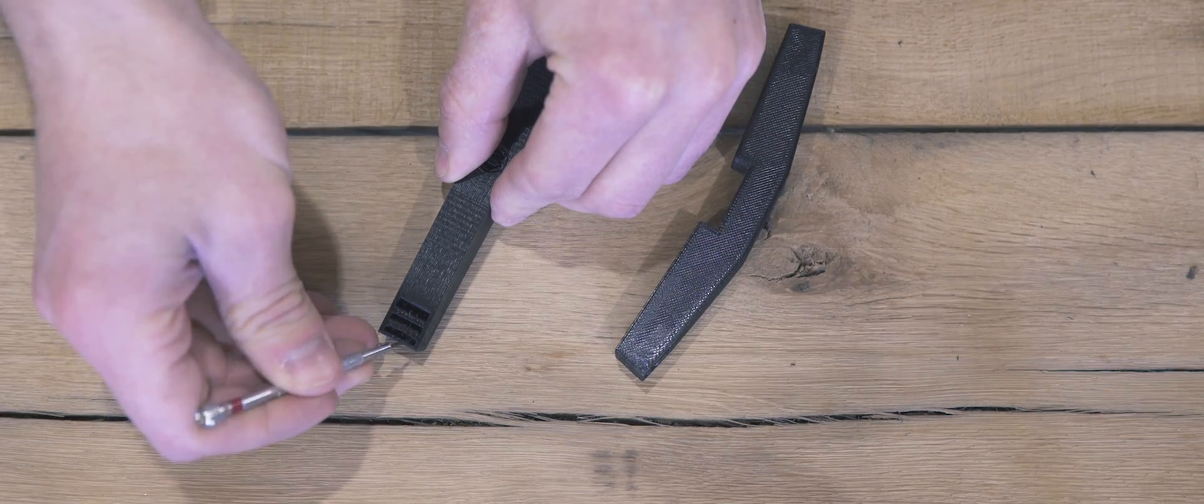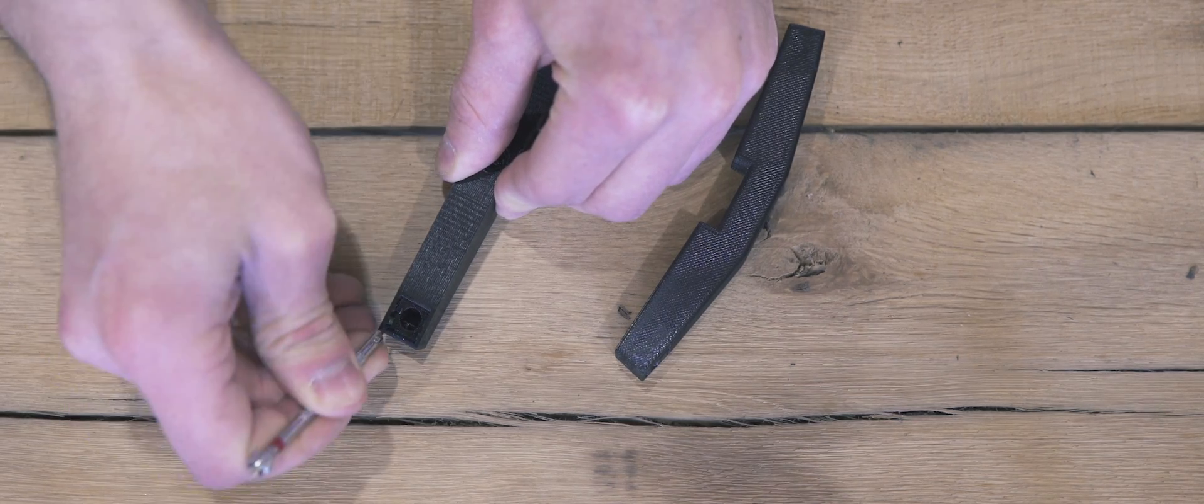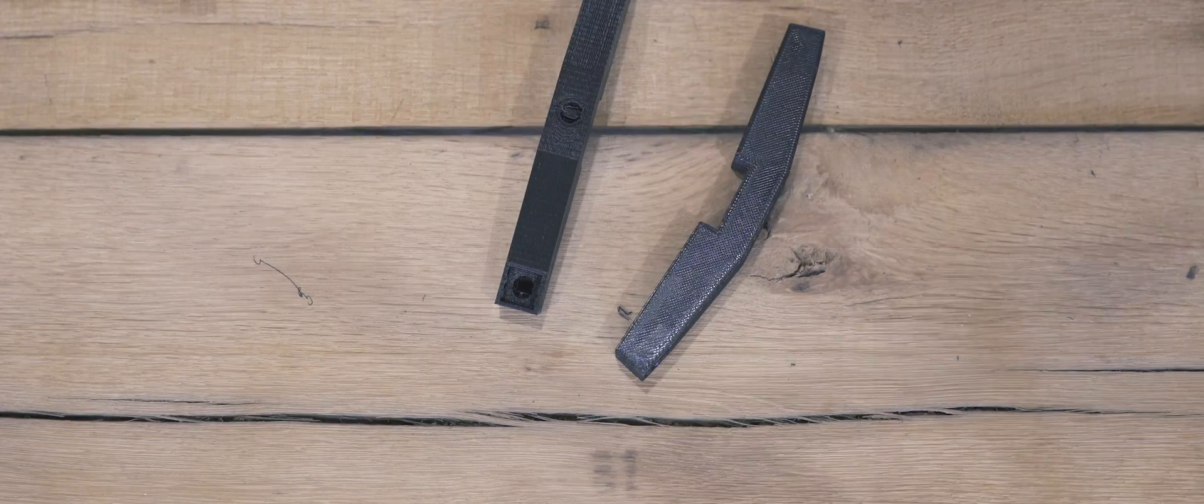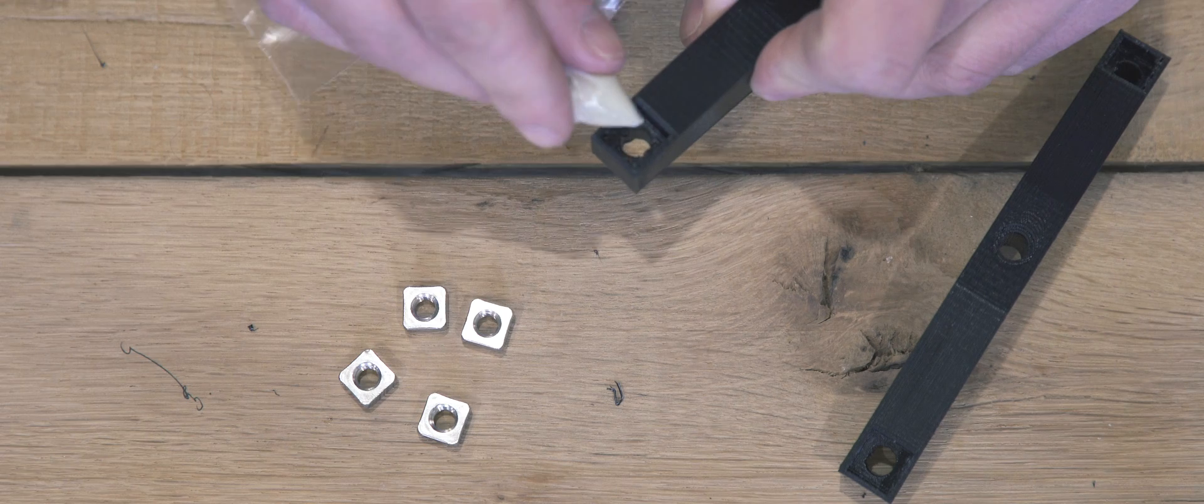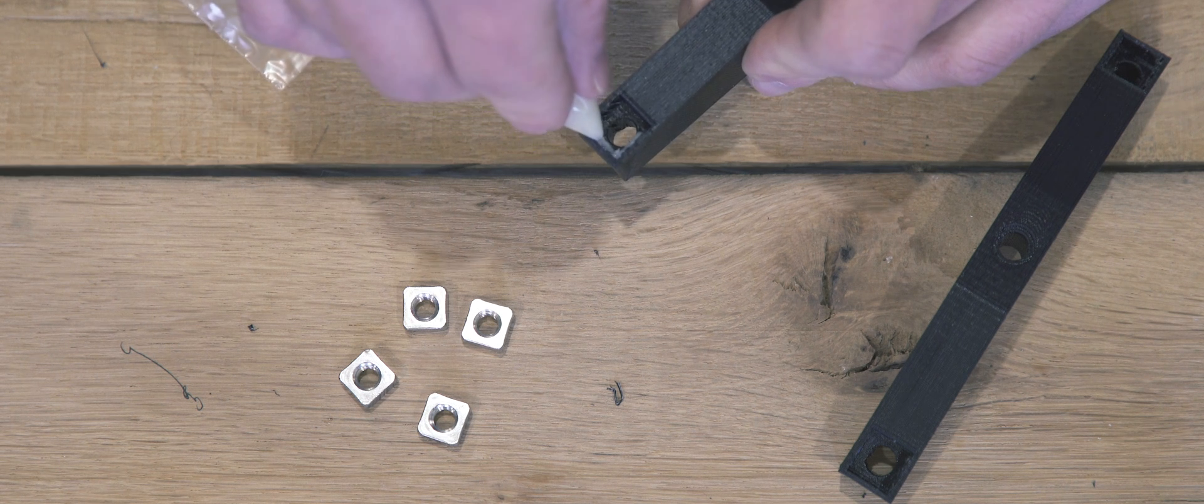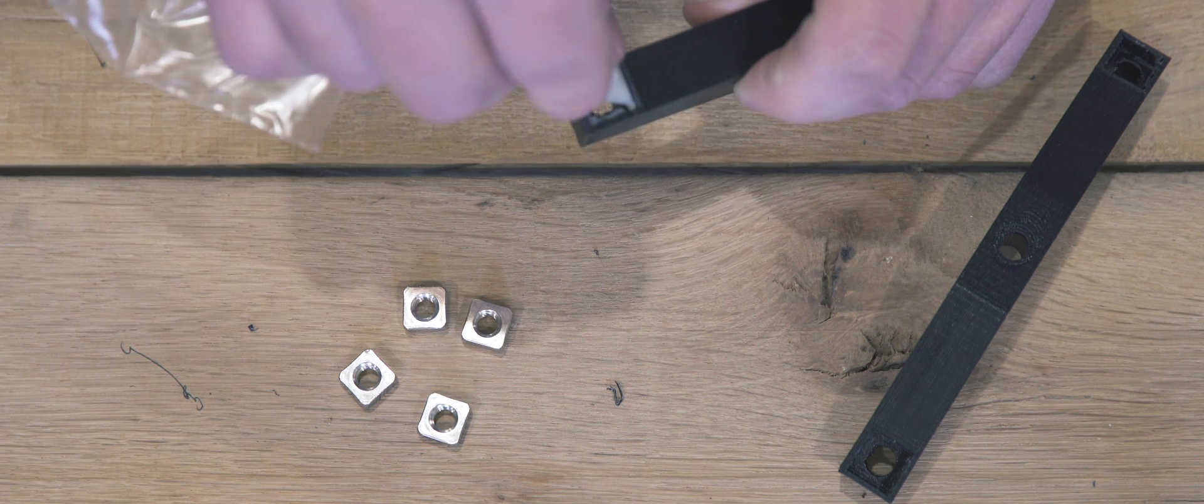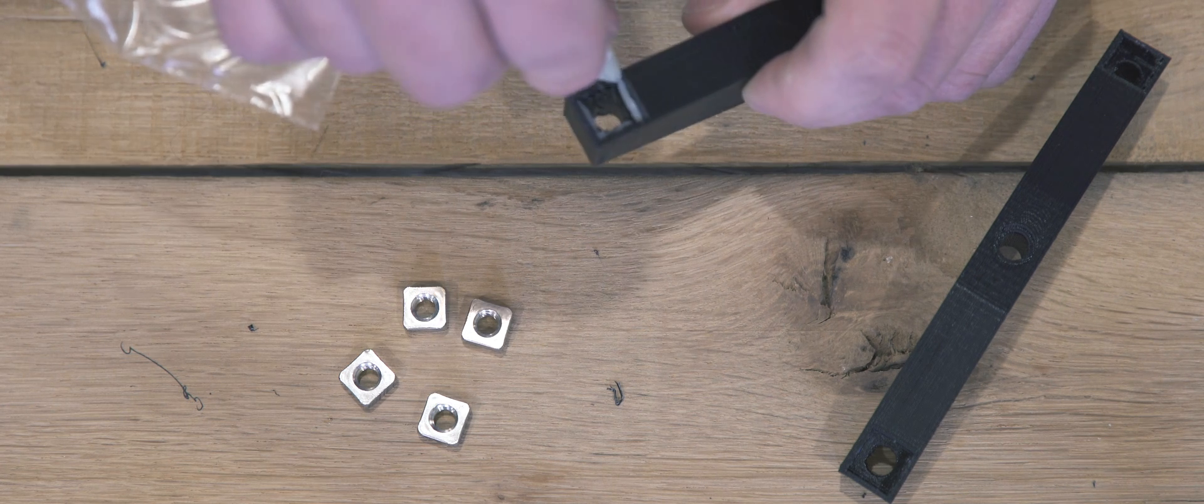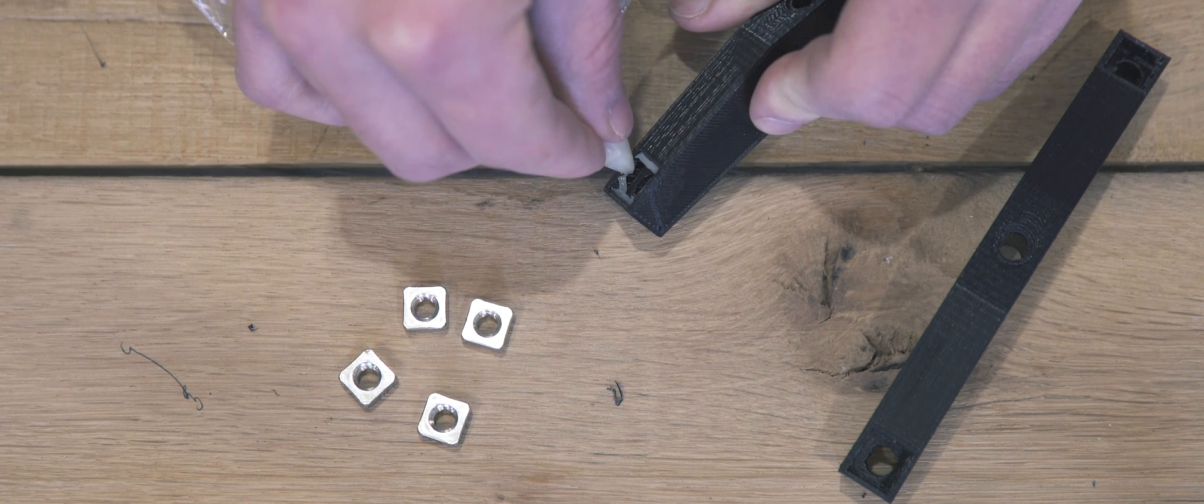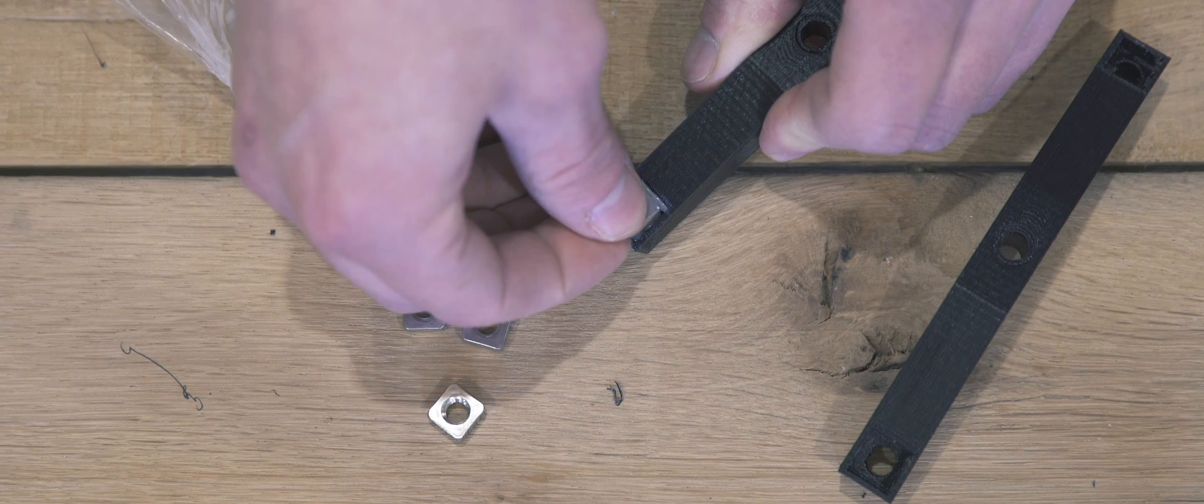So after you've printed the legs, you're going to have some support material to remove. I usually just use a small flat head screwdriver. Once you've exposed the recesses for the square nuts, you can mix up some epoxy and glue them in. I like to use a small plastic bag and cut the very tip of the corner off so that I can apply the epoxy relatively precisely. It's way easier than trying to do it with a toothpick. Just try not to get it into any of the threaded area of the nut because if you do, you might have to essentially re-tap it out later.